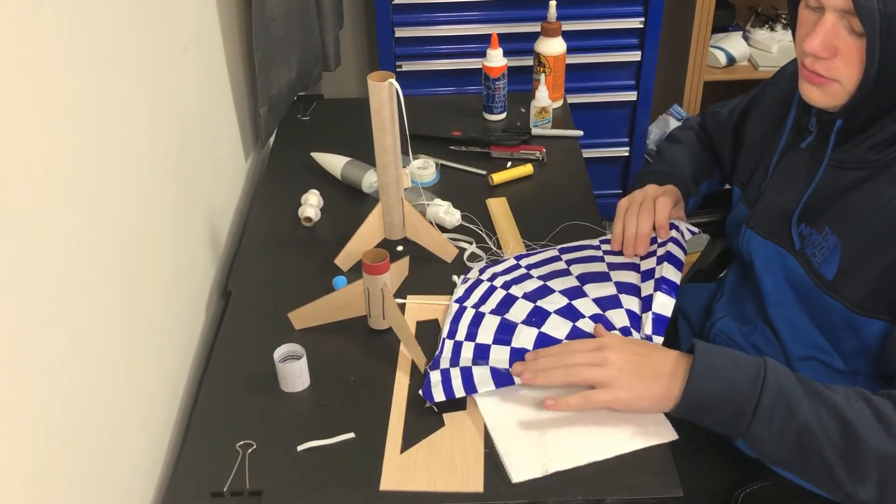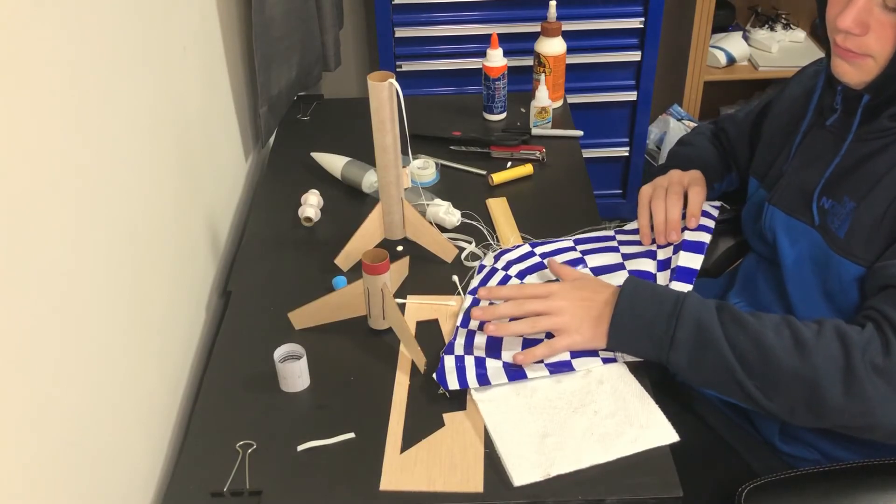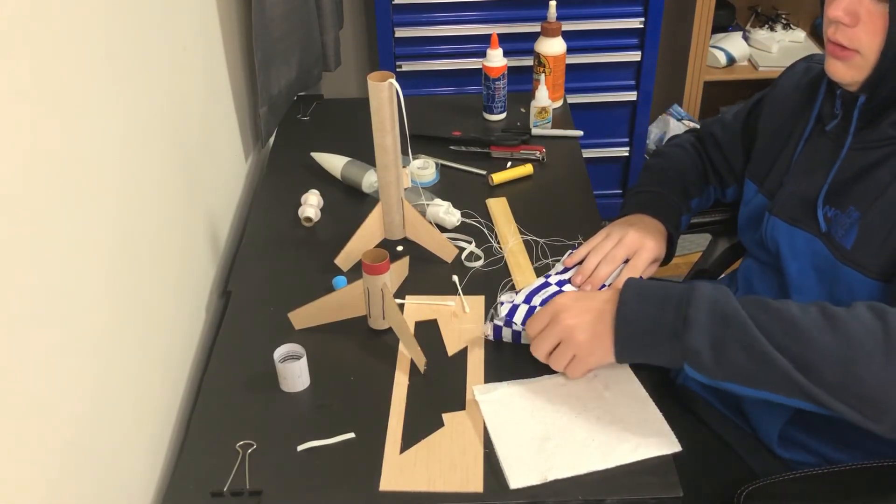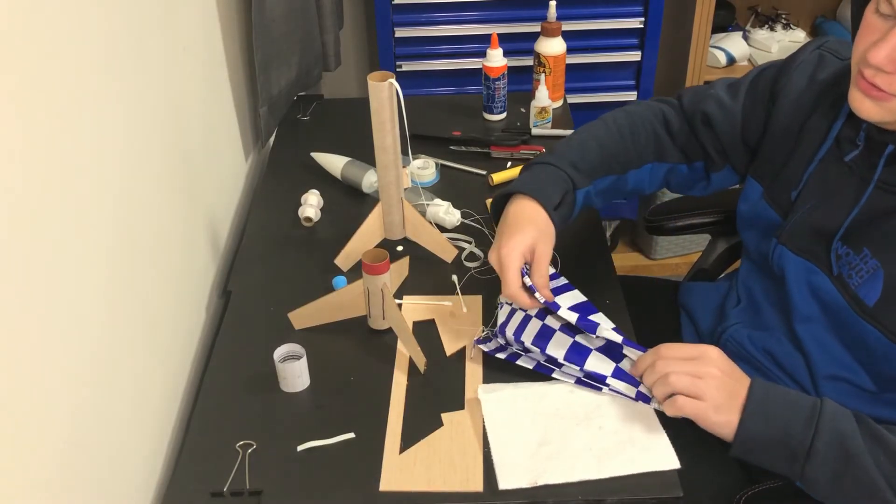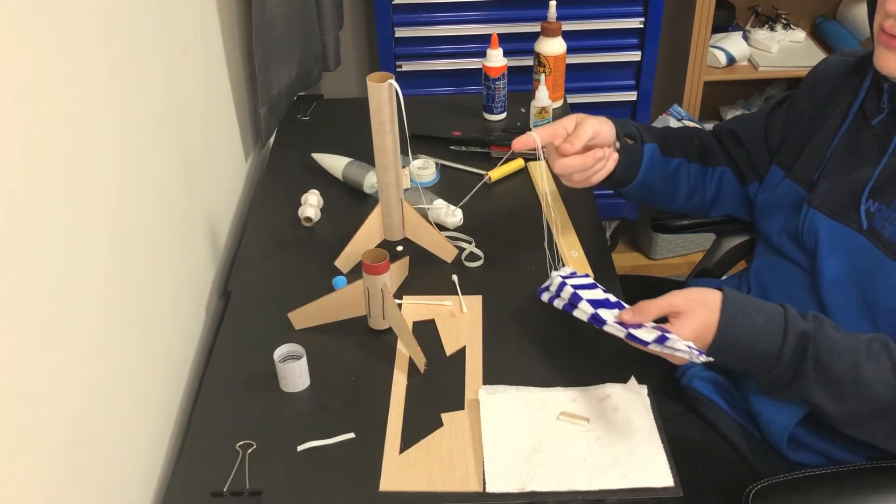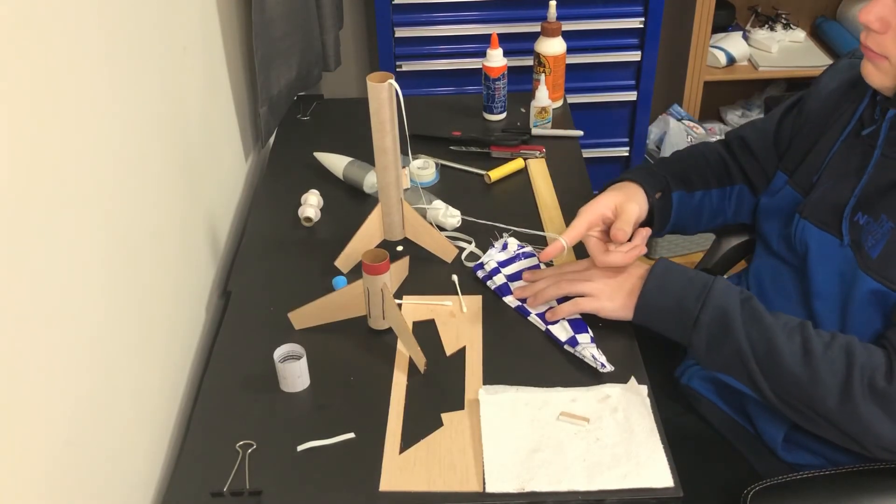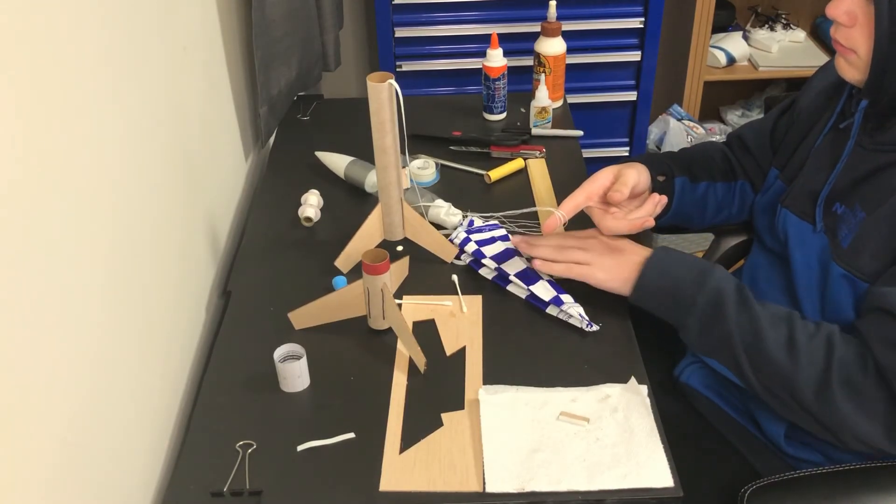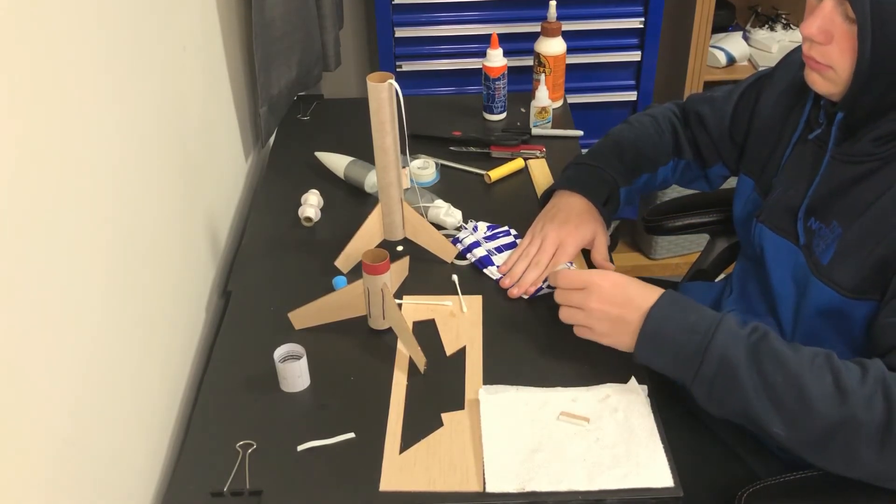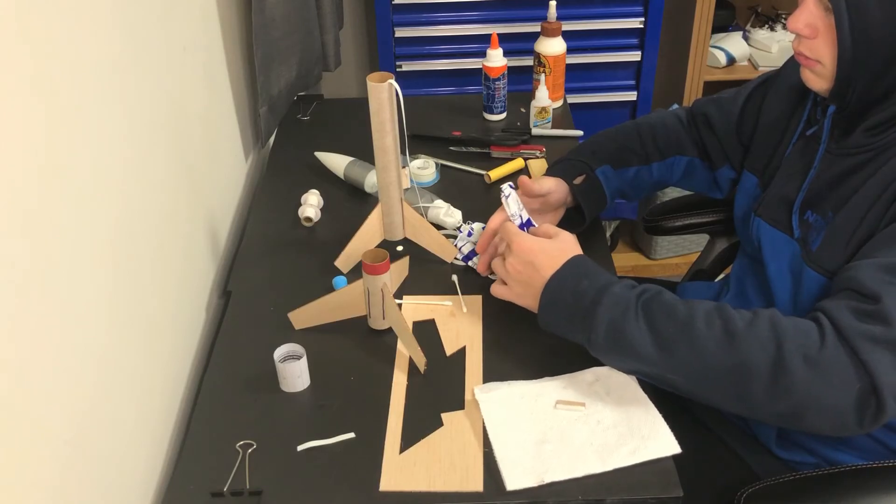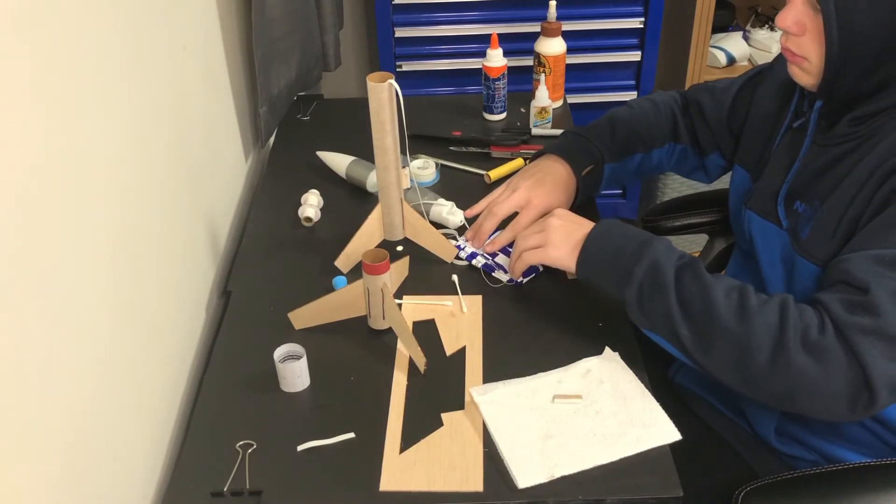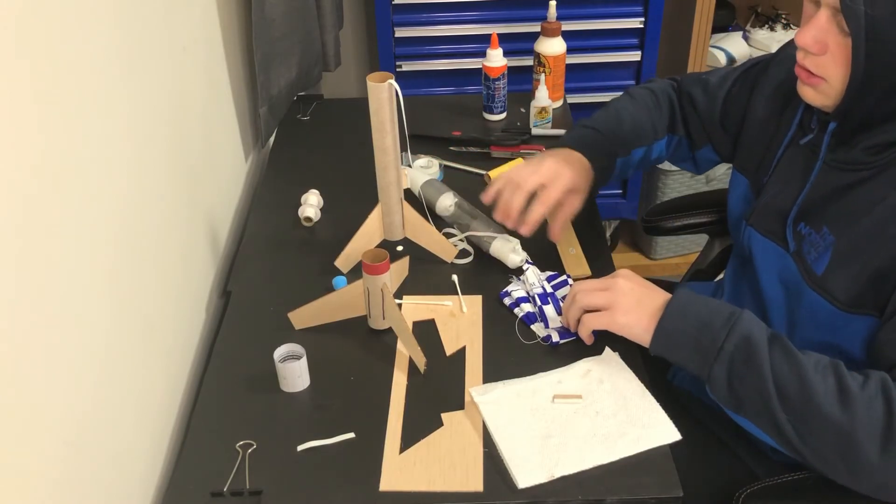To fold your parachute, you're going to fold it in half and keep folding it in half basically until it looks like a good amount of folds, probably right about here. Tuck the string on the inside and fold it over itself. And now roll the parachute.